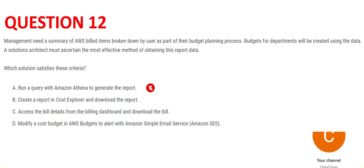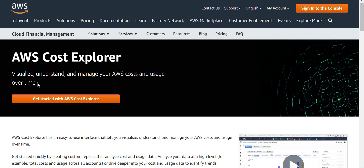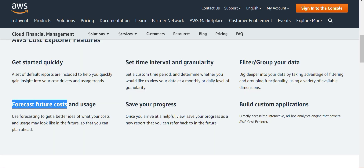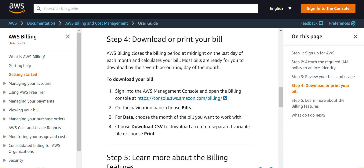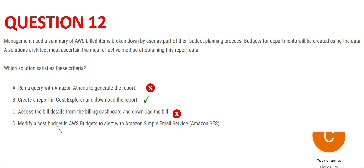Option B says use Cost Explorer and download the report. This is the right tool — it is used to manage your costs and usage over time and to forecast spending, which is exactly what we are doing: budget planning. So B is correct. Option C is just used to generate bills via the billing dashboard, so C is wrong. Option D suggests using AWS Budgets to set alerts, which is for controlling cost when a limit is crossed — not the requirement here. So D is wrong; B is the final answer.